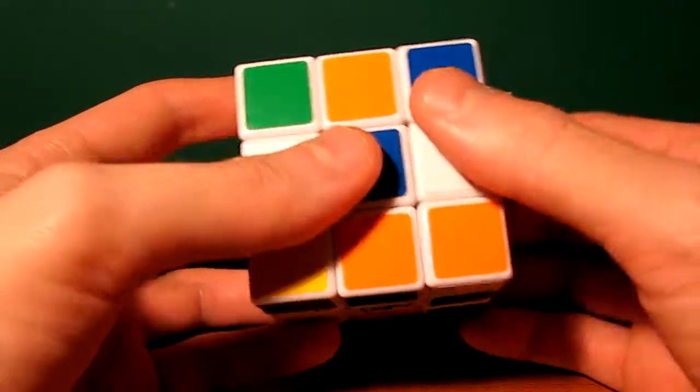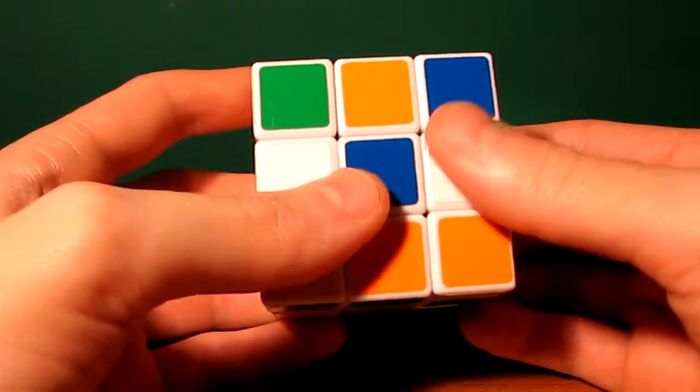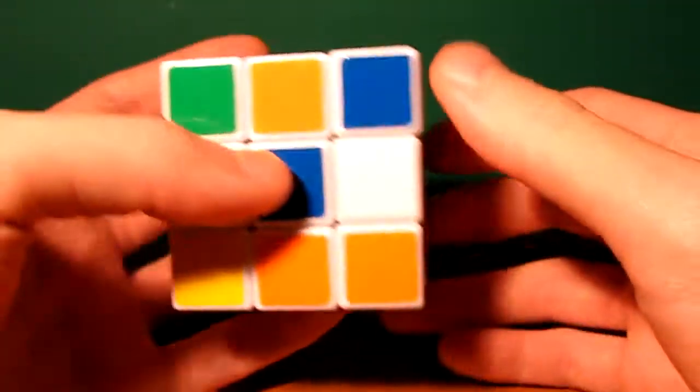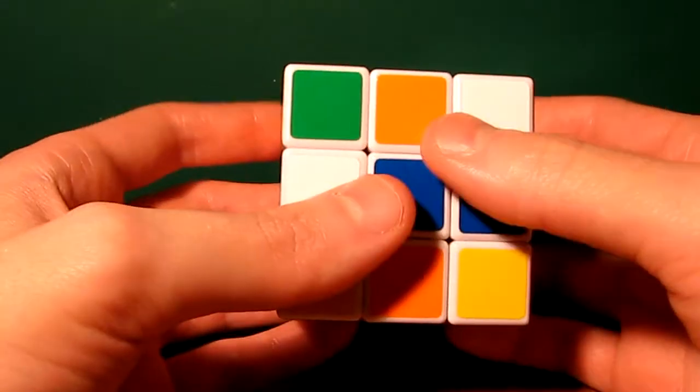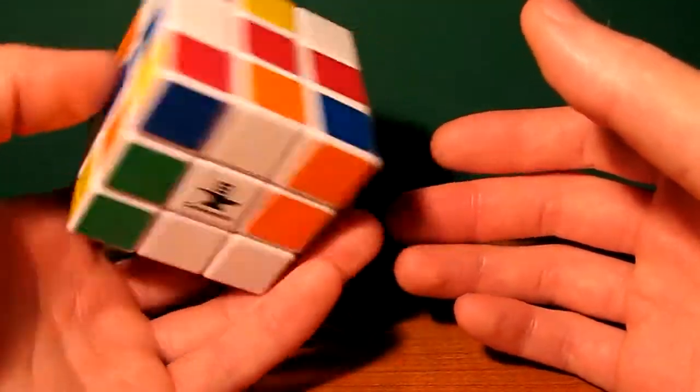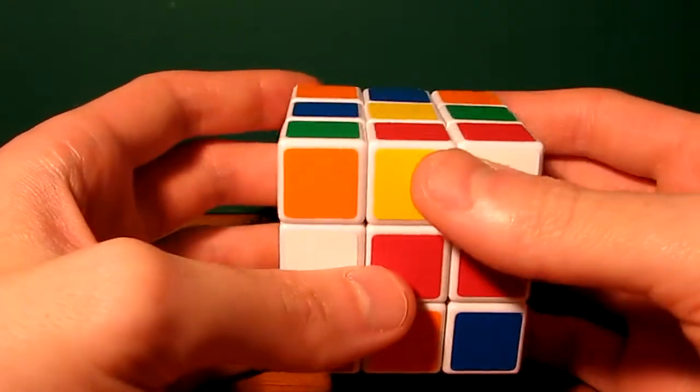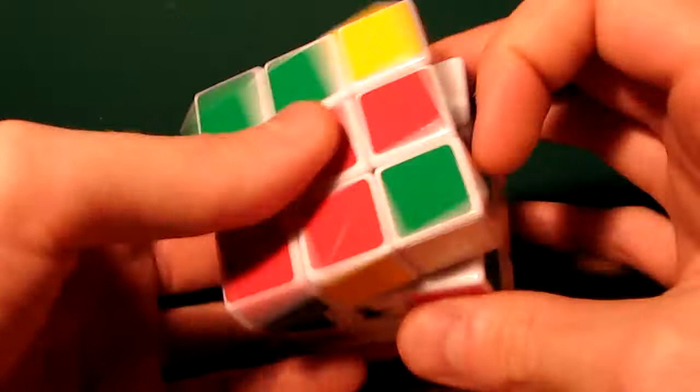If you're looking to get into speed cubing, then there's a better method out there and it was done by a person, Badmephisto is his username on YouTube, and his beginner method is basically a very stripped down version of the Fridrich method, which is one of the most popular speed solving methods out there.